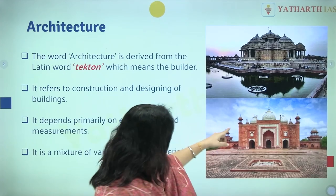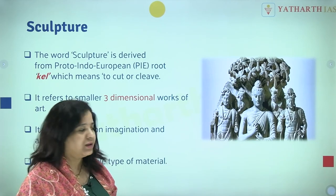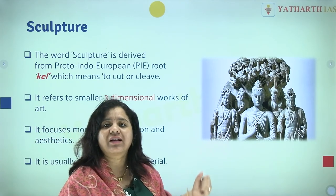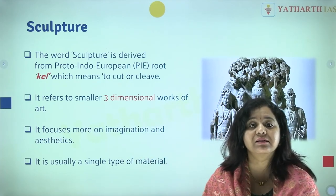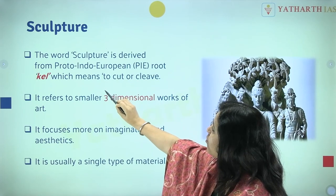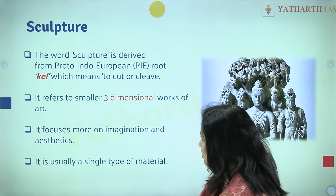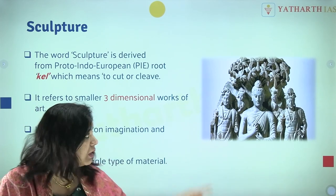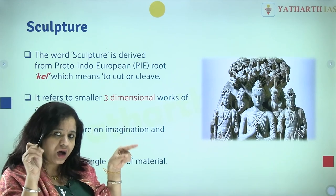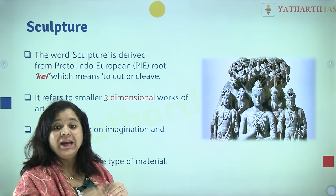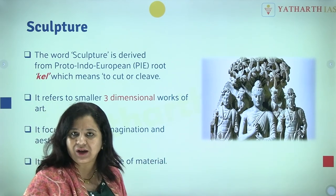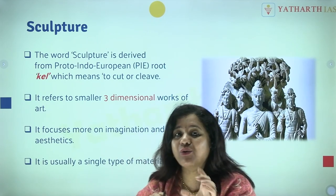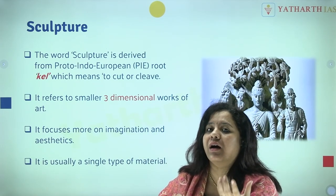Architecture means a monument or a building, but sculpture is something figurine. The word sculpture is derived from the Proto-Indo-European root 'kale,' meaning to cut or cleave. If you see an image — a rock has been taken, cleaved and cut into the image of Buddha — that is a sculpture: a figurine, an image.